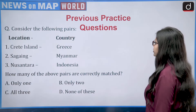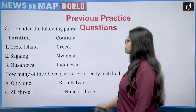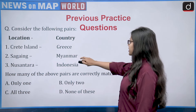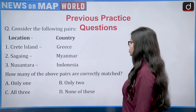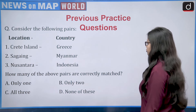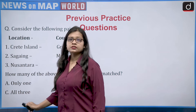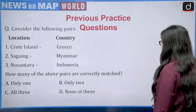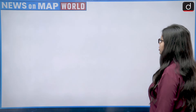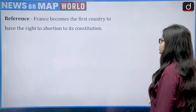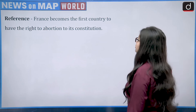Looking back at the question — how many of the above pairs are correctly matched — Crete Island–Greece is correct, Sagaing–Myanmar is correct, and Nusantara–Indonesia is also correct. So the correct answer is Option C, that is all three. Now moving to today's main episode questions.